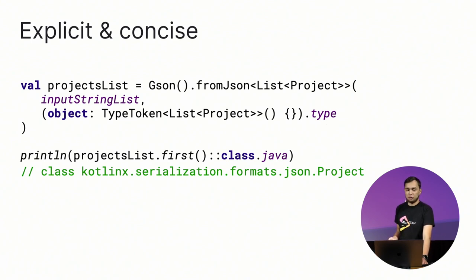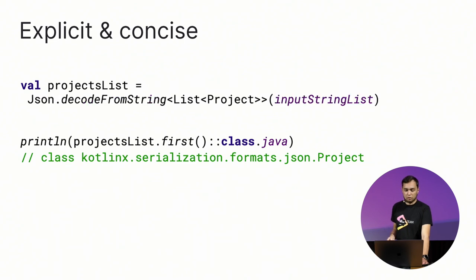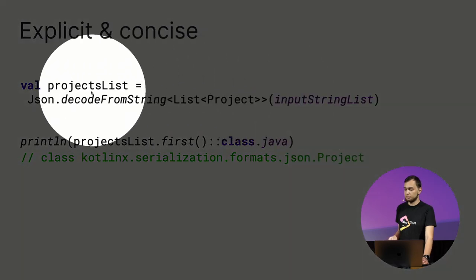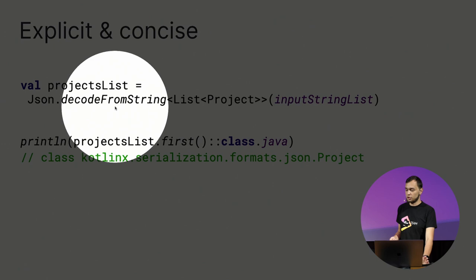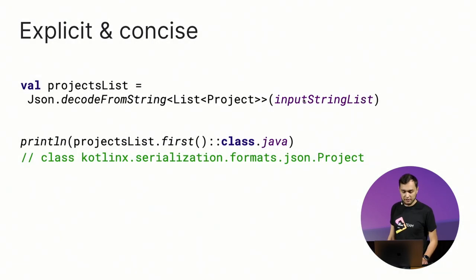You may know that to solve this problem you need to provide Gson with a TypeToken. So you create an anonymous object providing a TypeToken, and it correctly captures all the generic arguments so you finally get your Project objects. But this code looks quite cumbersome and is hard to understand without deep knowledge of the problem — and it looks ugly. If we compare it to Kotlinx Serialization, it knows about generics and correctly parses our Project class without any additional construction. We just call decodeFromString with a list of projects, and it simply works.